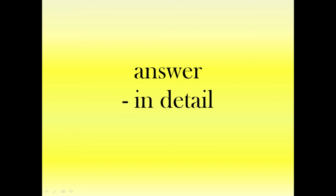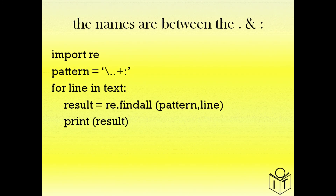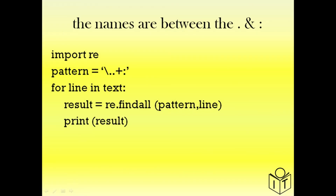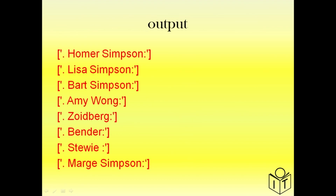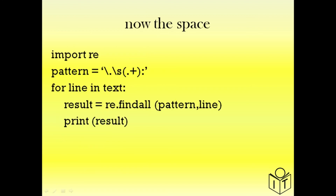Now for the answer to the challenge. The names are between the dots after the numbers and the colon. We can parse the text using \. to match the actual dot, then match everything up to a colon — this matches the dot, space, name, and colon. Using brackets we extract just the name portion, but there's still a space in front of the names. We put \s outside the brackets to match and exclude that space, so now our list contains just the names.